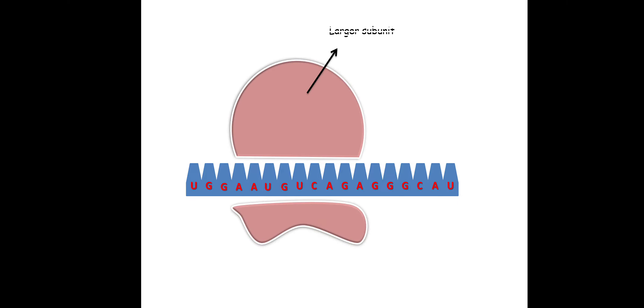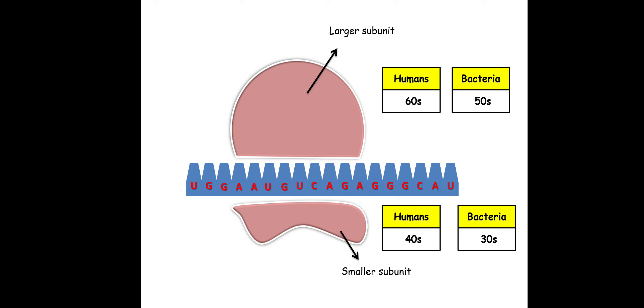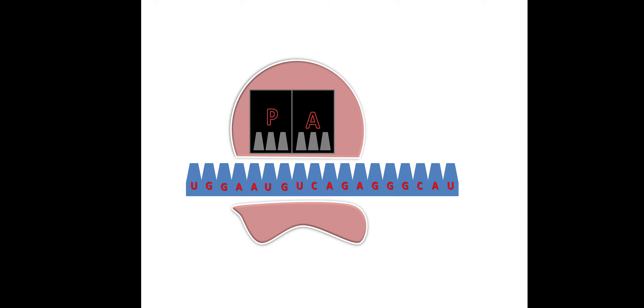Over this mRNA, two subunits of ribosome—a larger subunit and a smaller subunit—will be attached. In case of humans, the largest subunit is 60S and the smaller subunit is 40S, whereas in case of bacteria, the largest subunit is 50S and the smaller subunit is 30S.